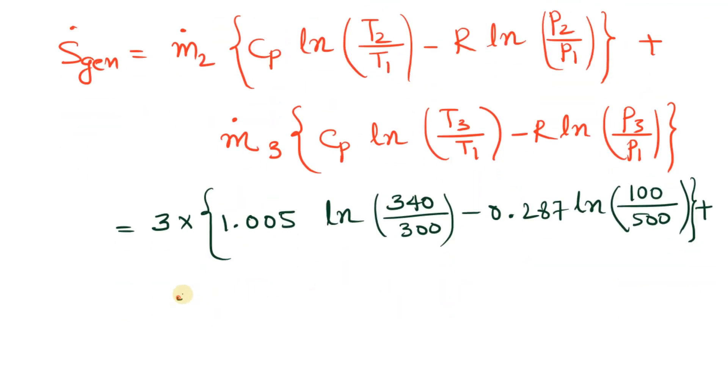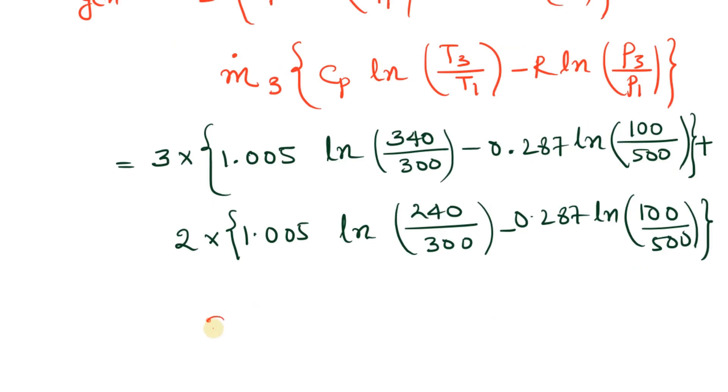Plus m3_dot which is 2 kg/s times 1.005 ln, T3 is 240 divided by 300, minus 0.287 ln, P3 is 100 and P1 is 500.